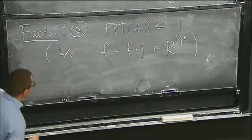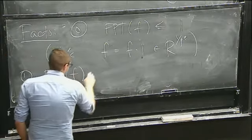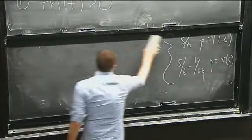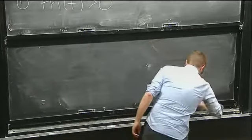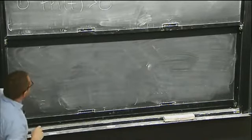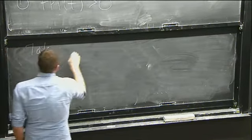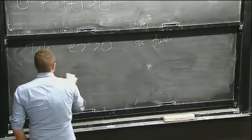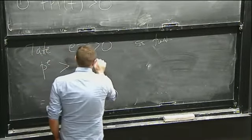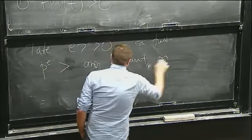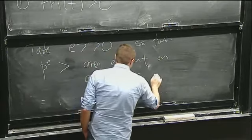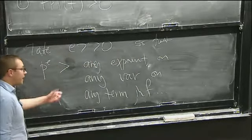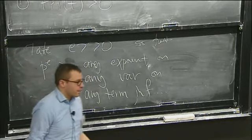But the second important thing is that it's not 0. So let's take some huge integer E such that p^E is bigger than any exponent on any variable on any term inside of f. If I've done that, when I write down f — if I divide by p^E — each of the variables that show up, their exponent after dividing is higher.